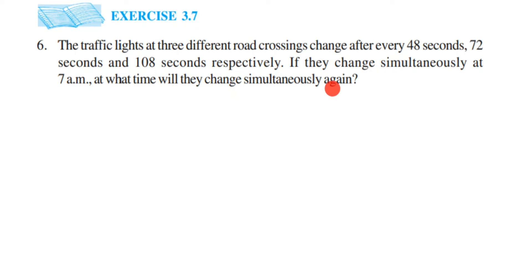So there are traffic lights at three different places — one changes every 48 seconds, one at 72, and the third at 108. They all change together at 7 a.m. After that, when will they next change simultaneously? To find that, we're going to find the Least Common Multiple of 48, 72, and 108.